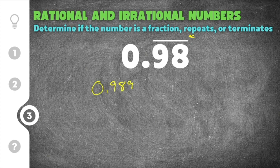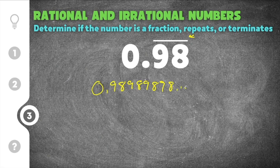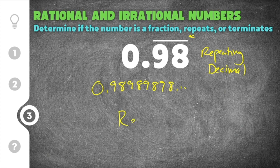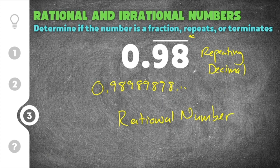it would repeat 9.8, 9.8, 9.8, over and over and over again. And because it's repeating the same thing over and over again, that is a repeating decimal. And because it's a repeating decimal, that means that 0.98 is a rational number. And you can write it as a fraction.